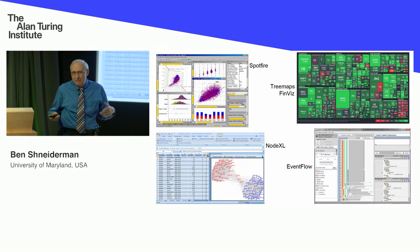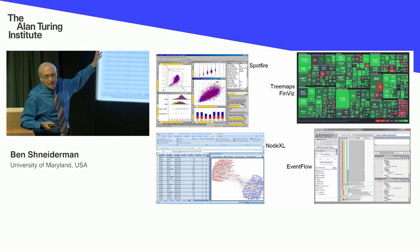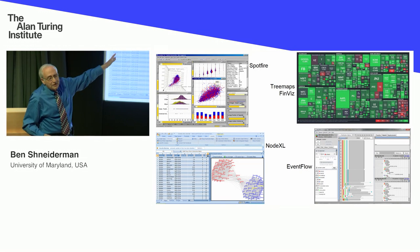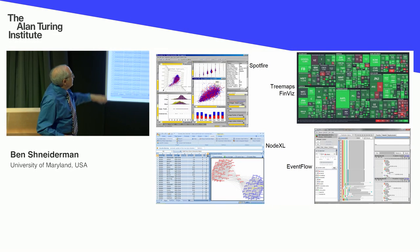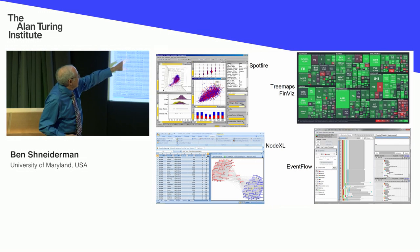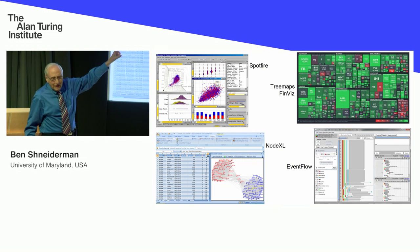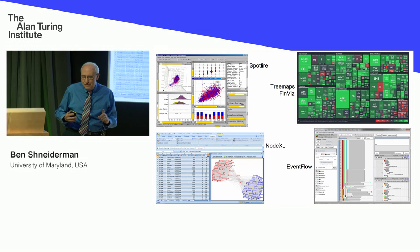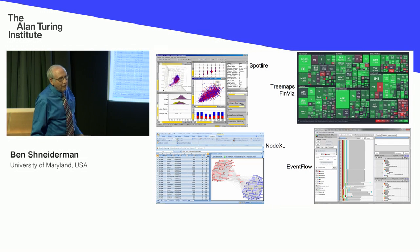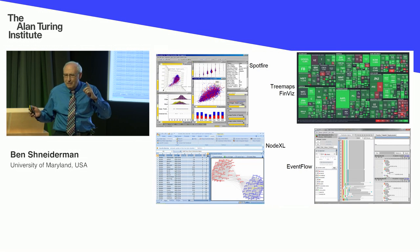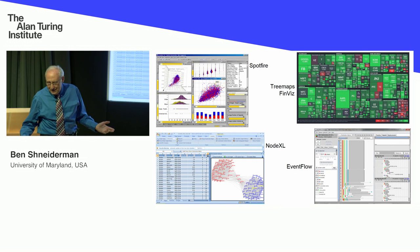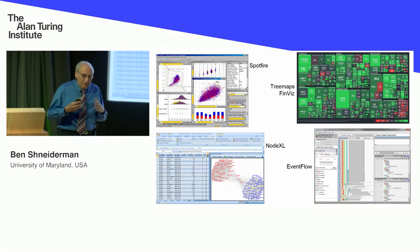We also did important work on information visualization, designing new environments like Spotfire, a commercial success story from the 90s. The tree map idea shows 500 stocks in the US stock market — you can see different industry groups: technology in the upper left, services, financial, consumer goods, and so on. The area indicates market capitalization, with the biggies being Apple, Google, Facebook, Microsoft, ExxonMobil. The color indicates whether the stock is going up or down.